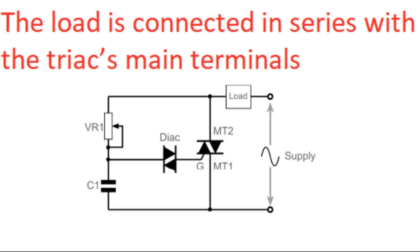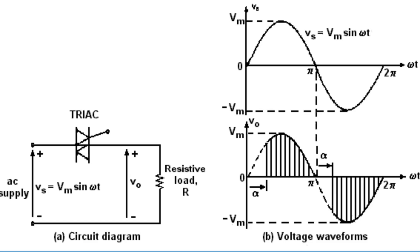The load is connected in series with the TRIAC's main terminals irrespective of the AC line polarities. Main terminal 1 is connected to the load and main terminal 2 is connected to the AC supply, or main terminal 2 is connected to the load and main terminal 1 is connected to the other terminal of the AC line supply. Therefore, the other terminal of the load is connected to the remaining terminal of the AC supply line as shown here.